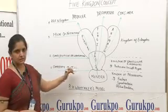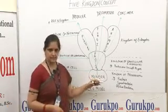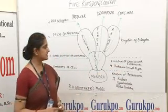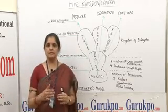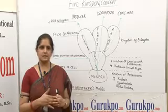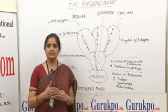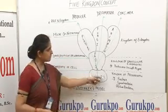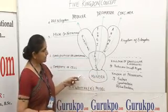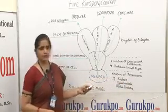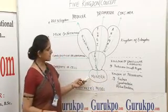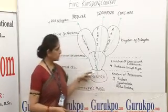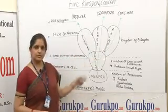Based on complexity of cell, there are two types of cells: prokaryotes and eukaryotes. Prokaryotic cells lack a definite nucleus and the genetic material lies in the cytoplasm, whereas eukaryotic cells have a definite nucleus and the genetic material lies inside the nucleus. Organisms with only prokaryotic cells fall into Kingdom Monera, such as bacteria, eubacteria, and archaebacteria.